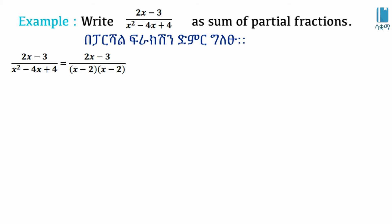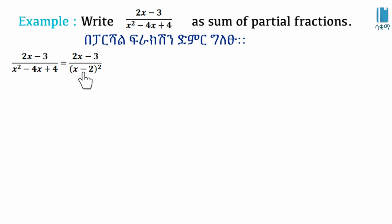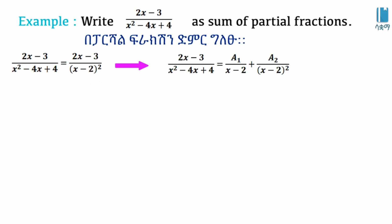We check that the linear factor is x minus 2 squared. So the partial fraction decomposition introduces: A1 over x minus 2, plus A2 over x minus 2 squared.